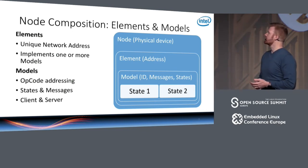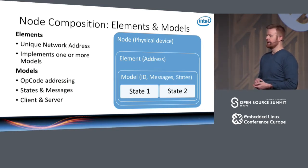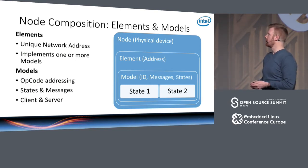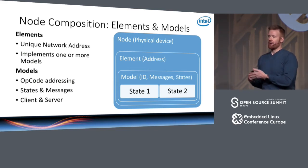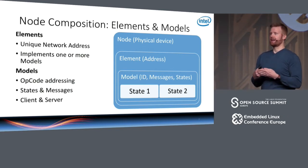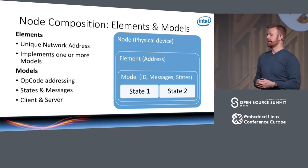Each node participating in a mesh network has one or more so-called elements. An element is the smallest addressable entity — each element has a network address you can send messages to. Each element in turn consists of one or more models. A model is essentially a collection of messages and states relating to those messages, with messages identified using opcodes. On a high level, models are categorized into client models, which typically initiate sending messages and requests, and server models, which receive requests and respond.